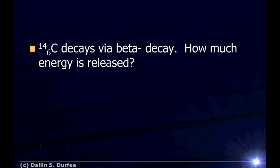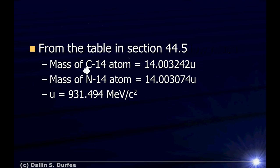When carbon-14 decays via beta minus decay, how much energy is released? The energy released is the difference in masses times C squared — how much mass I started with minus how much mass I ended with. I started with one carbon-14 nucleus, and I ended up with one nitrogen-14 nucleus plus one electron plus a neutrino. Neutrinos' masses are really, really tiny — for a long time we thought they had no mass — so we'll ignore the rest mass of the neutrino. The neutrino carries kinetic energy; that's part of the energy released.